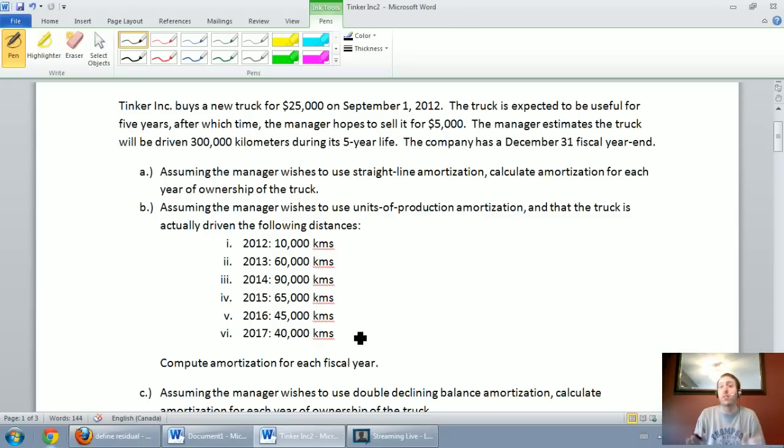Double Declining Balance says it's more realistic for an asset to lose more of its value upfront. They say when a car loses the most value is the moment you drive it off the lot. It's called an Accelerated Amortization Method. It tries to capture the fact that assets lose value or drop in value quite quickly in the early years and slower over time.